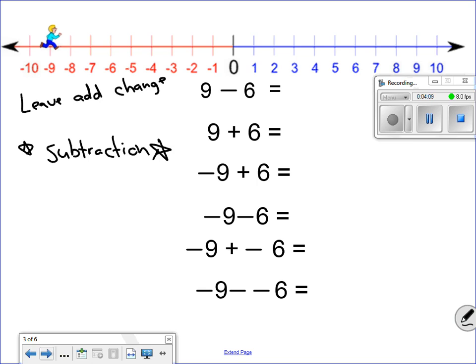Keep that in mind. So this very first problem, we always know that 9 minus 6 equals 3. Let's look at the leave, add, change concept. I'm going to leave my positive 9 alone. I'm going to change subtraction to adding, and then that means I have to change my last one to a negative. So if I have 9 positives and 6 negatives, that means when I cross off the 6 negatives, I'm left with 3 positives left over.